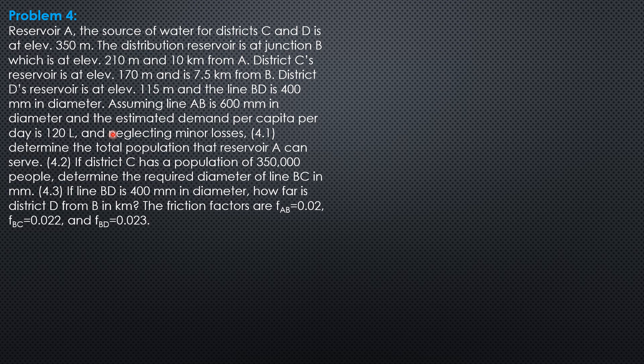Assuming line AB is 600 mm in diameter and the estimated demand per capita per day is 120 liters or 0.12 cubic meter and neglecting minor losses, determine the total population that Reservoir A can serve.